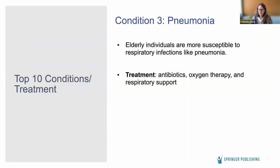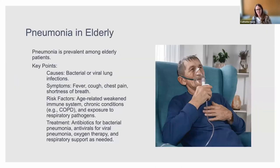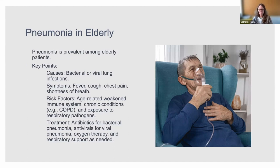Number three is pneumonia. Elderly patients are much more susceptible to respiratory infections like pneumonia. Treatment includes antibiotics, oxygen therapy, and respiratory support. There's bacterial, viral, and fungal lung infections, with bacterial and viral being most common. Symptoms for pneumonia are fever, cough, chest pain, and shortness of breath. Anytime you have chest pain, especially in the elderly, you definitely want to rule out any type of cardiac event. A fever along with cough is the triad for pneumonia.